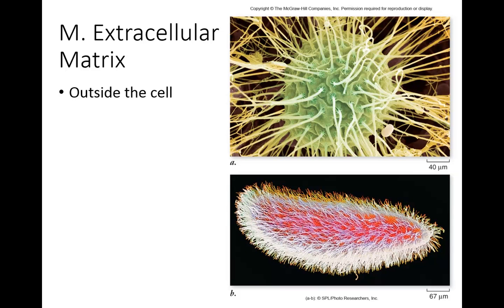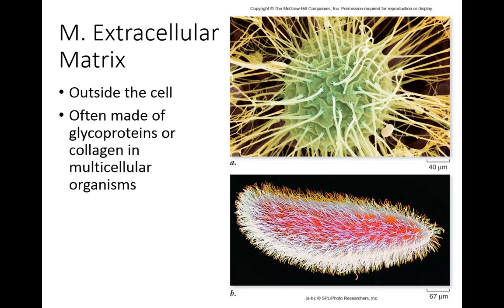The extracellular matrix, this is found on the outside of the cell. So extra meaning outside, cellular, of course, referring to a cell. And this is a bunch of different types of molecules, macromolecules, that exist on the outside of the cell. Some of them are glycoproteins, which is sugar and protein combined. Also has elements of collagen, which is a protein. And what it does is it provides a protective layer outside the cell so that the cell is not just totally exposed to whatever is around it, but it has these glycoproteins to protect it. This is a scanning electron microscope of a cell with a very thick extracellular matrix. And here's another cell that has a very long and complex intertwined extracellular matrix.